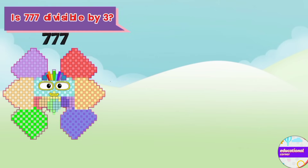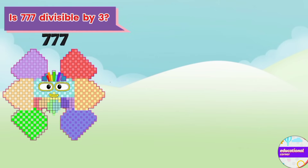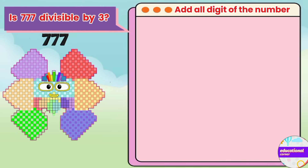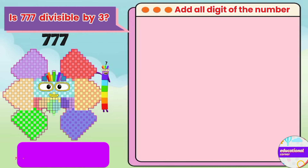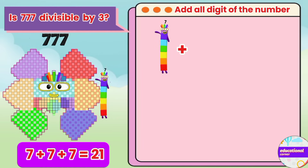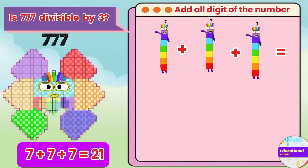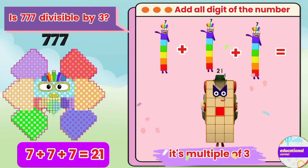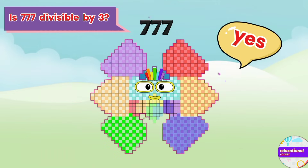Is 777 divisible by 3? Let's check. 7 plus 7 plus 7 equals 21. It's a multiple of 3. Yes!